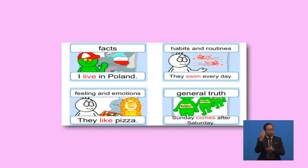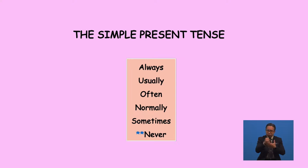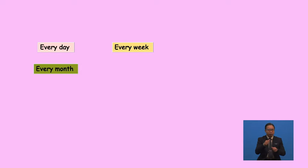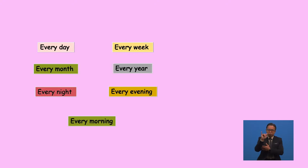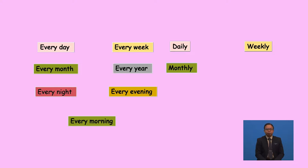I hope all of you have a great idea of what simple present tense is and how we use it. Generally, we use simple present tense for facts, habits, routines, feelings, emotions, and general truth. Still remember the key words? Namely: often, usually, always, sometimes, and normally. Then phrases like every day, every week, every month, every year, every night, every morning, and every evening. Words like daily, weekly, monthly, yearly, annually, and fortnightly also play an essential role. When you come across these keywords, remember to use simple present tense.